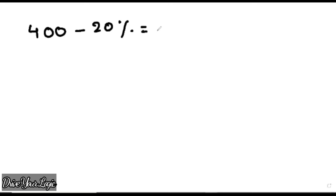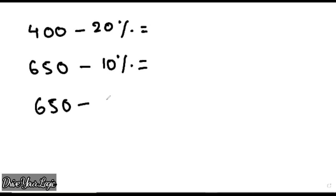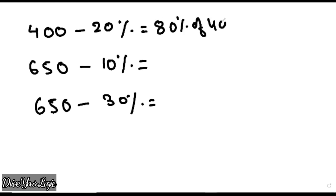Let us do a few more sums. You all try first, then I'm going to show you. First example: 400 minus 20 percent. What is left out of 100 minus 20? 80 percent is left. So 80 percent of 400 — leave the two zeros, what is left is 8 and 4, multiply those two and your answer is 320. So 400 minus 20 percent is 320. Very easy.